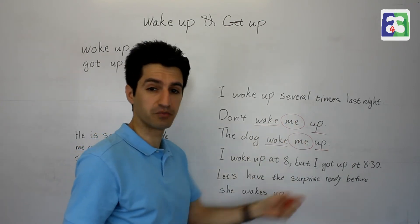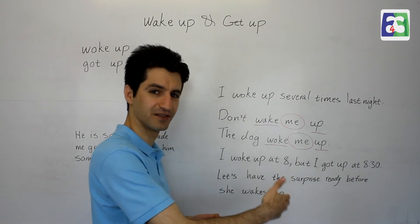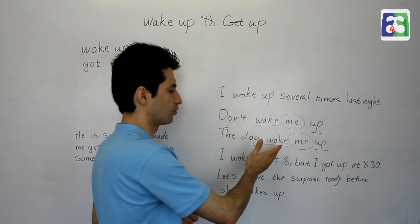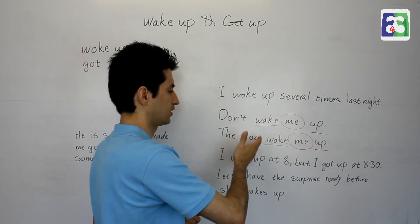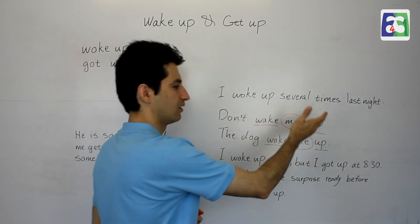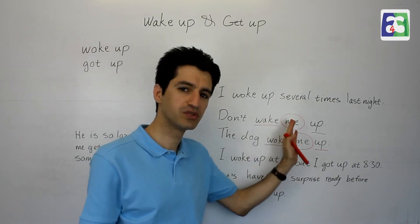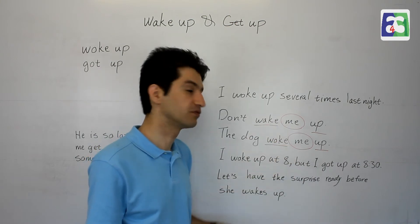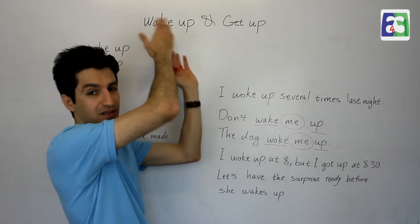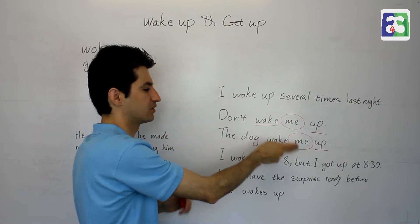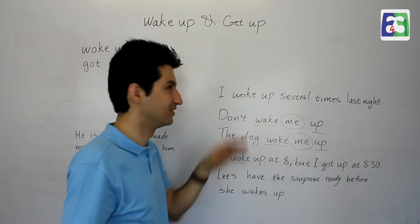For example: me, you, her, him, his friend, her friend, her mother. So: 'The dog woke her up,' or 'They don't wake her mother up.' We use those kinds of words in between. We would not say a name like Janet there — of course if you do, it's not a big deal, it's okay. So you can separate these two and put the object pronoun in between.